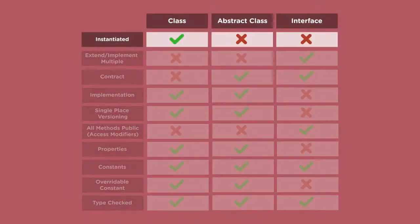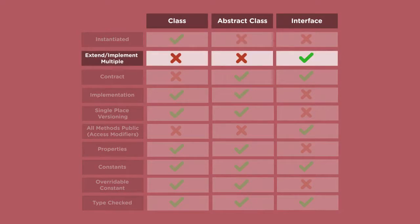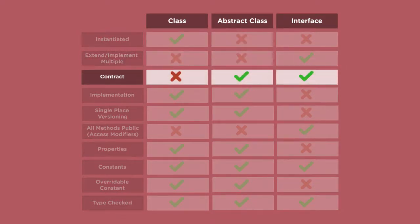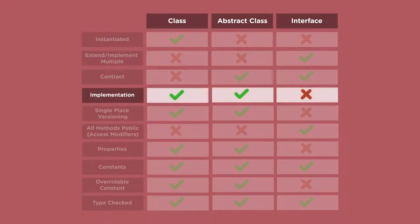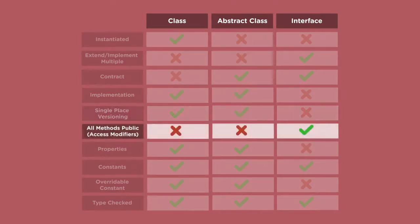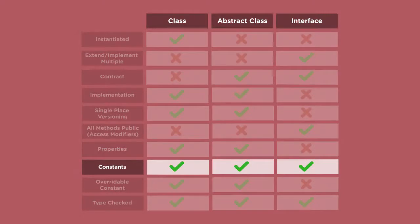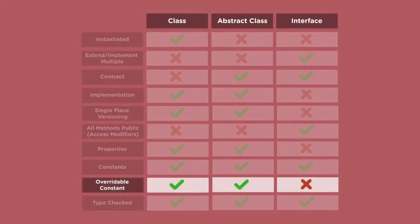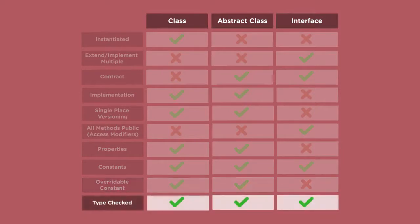I've put together a chart that lays out the similarities and differences between these constructs. Can it be instantiated? Does it allow for multiple inheritance? Can you define contractual functions? Does it contain implementation details? Can you make a change that is shared by everything that uses this construct? Are all methods required to be public? Can you define properties? Can you define constants? Can you override these constants? Can you type check for this construct?